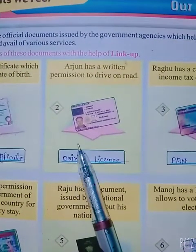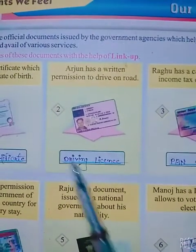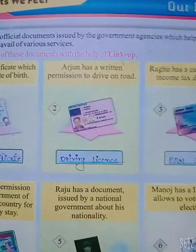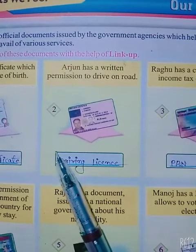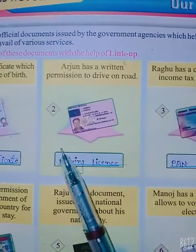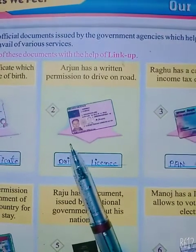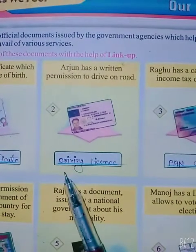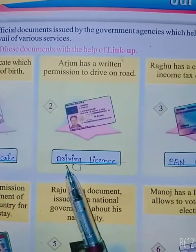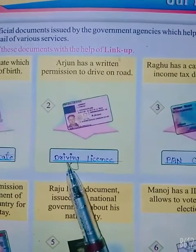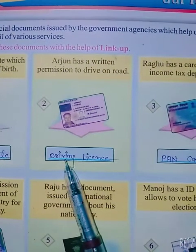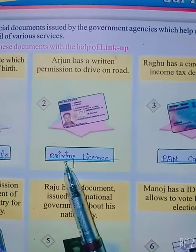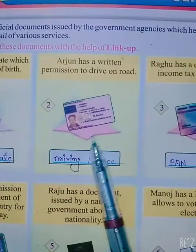Arjun has written permission to drive on the road. Arjun ki paas sadak par gaari chalane ki likhit anumati hai. Toh jo gaari chalate hain, unhein kis document ki zarurat hoti hai? Driving license. And this is the picture of a driving license.